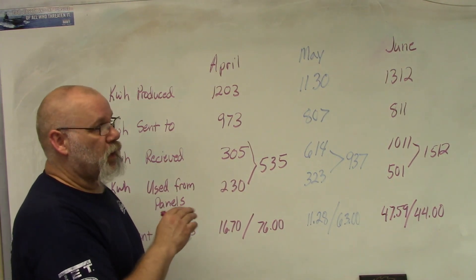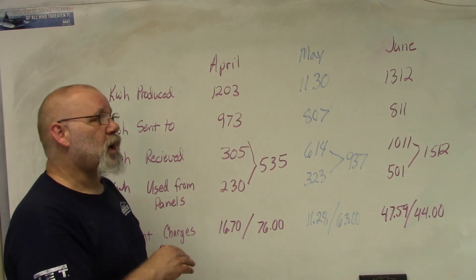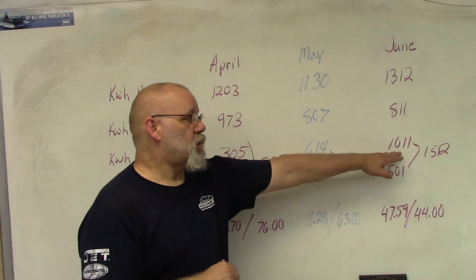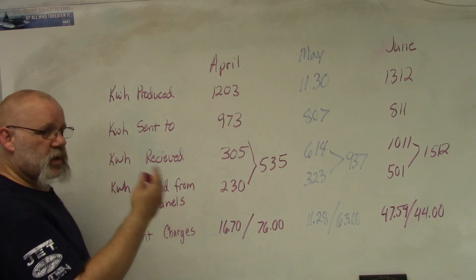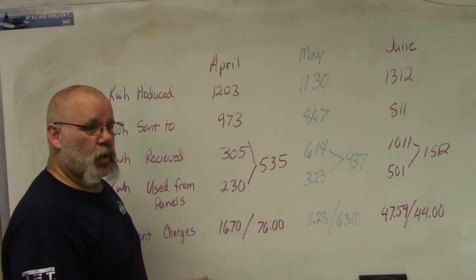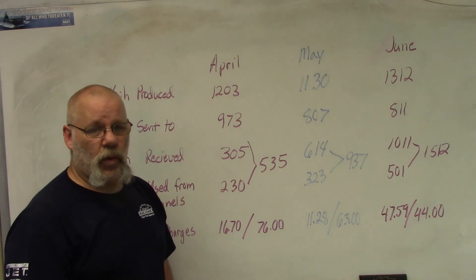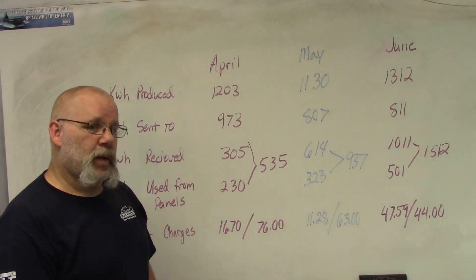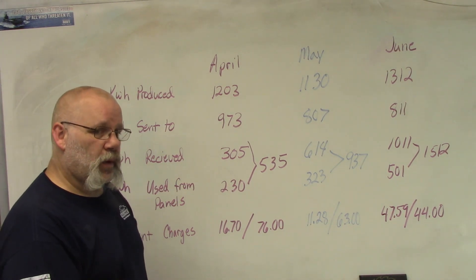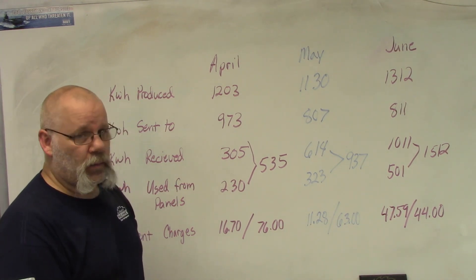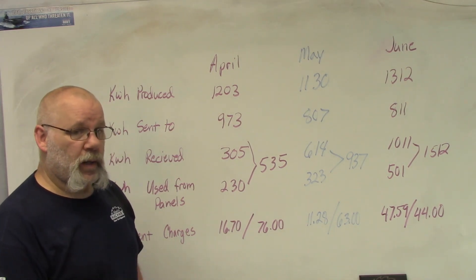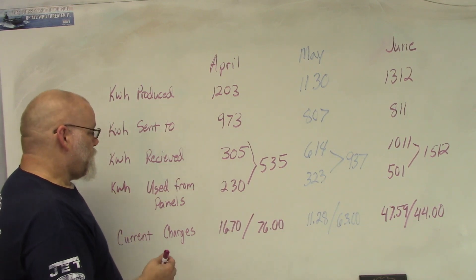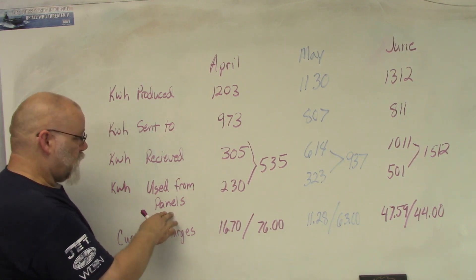At the end of June we had some hot weather where it got up near 100, so the air conditioner was working quite a bit even at night. That's why we drew so much. The last one here is used from panels. This is what we used before we sent it to the power company. If our solar panels are generating electricity and we're using electricity, it will pull from the panels first, and then it'll pull from the grid if we need extra power.